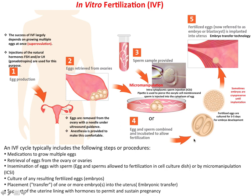Finally, in the fifth step, the fertilized eggs are cultured in lab conditions for 3 to 5 days and embryos are developed. Healthy embryos are implanted into the uterus by embryo transfer technology, and some healthy embryos are also preserved at very low temperature — that is called cryopreservation. The embryo transfer technology is quite critical for humans.